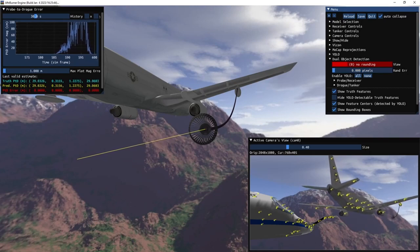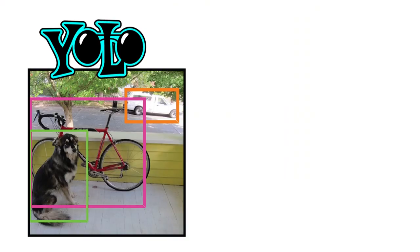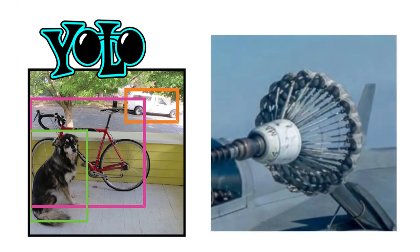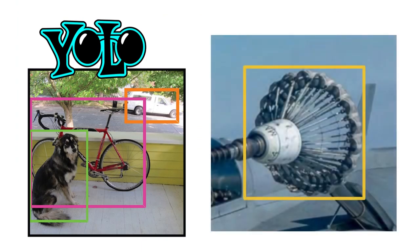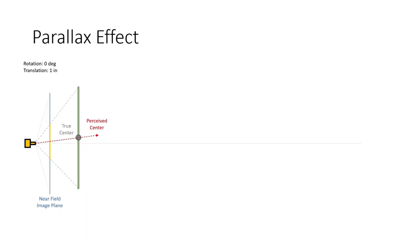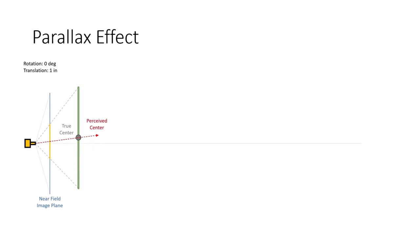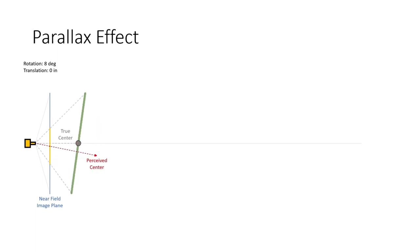We accomplished point detection in our pipeline using YOLO, a state-of-the-art object detector. However, the problem with using its traditional bounding box predictions is that the perceived 2D object center in the image is rarely the same as the true 3D object center projected into the image. This is due to what we refer to in this effort as the parallax effect, which is caused by the disparity in projective geometry between points closer to the camera's image plane and those further away.